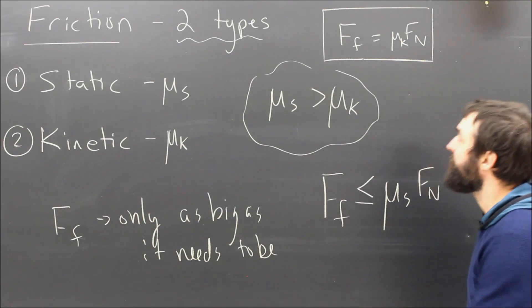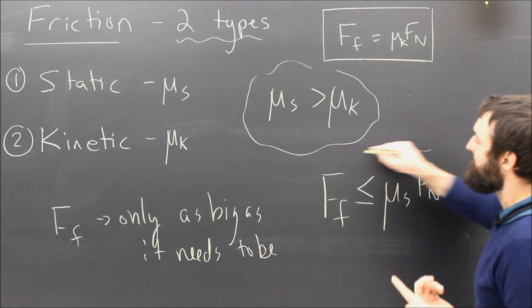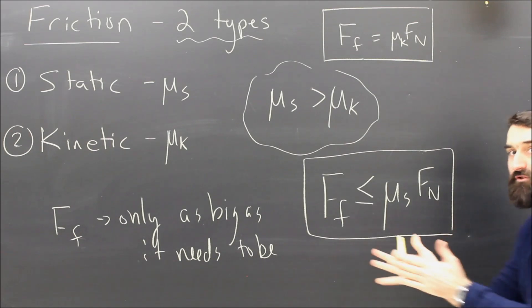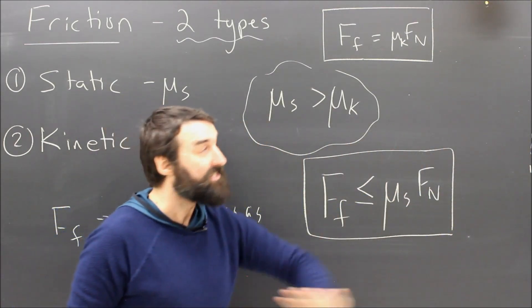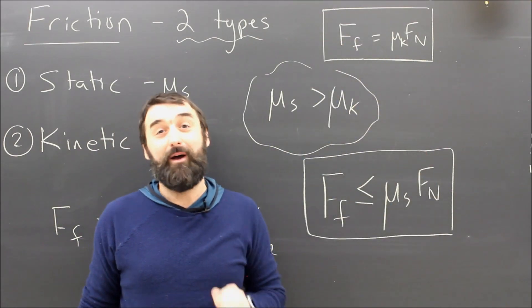No big deal. So friction is equal to mu Fn. But you need to understand that if the two surfaces aren't sliding, it will only be as big as mu Fn. Once it is sliding, then it's going to be mu Fn no matter what.